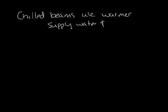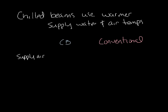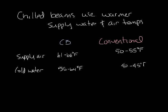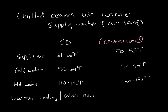Another benefit of chilled beam systems is that they use warmer supply water temperatures and warmer supply air temperatures than a conventional overhead air distribution system. For instance, the supply air temperature of a chilled beam system would be between 61 to 66 degrees Fahrenheit compared to 50 to 55 degrees in a conventional system. The cold water temperature would be 55 to 64 degrees for a chilled beam compared to 40 to 45 degrees in a conventional system. And the hot water temperatures are 100 to 140 degrees compared to 140 to 180 degrees for a conventional system. This warmer cooling temperature and colder heating temperatures will reduce the energy usage of the building.